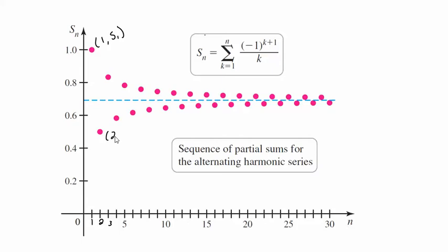This point right here is the point 2, S sub 2. So this is the sum of the first two terms. Remember what that was? That was a half. That was 0.5. The next one was supposed to be 5 sixths, which is about 0.8. So 3, S sub 3 is right here. That's about 0.83. Here's the point 4, S sub 4. So this is the sum of the first four terms, which is our 7 twelfths. Our decimal was a little less than 0.6. And if we kept going, you could see this is what would happen.